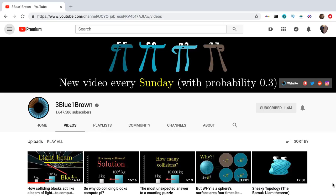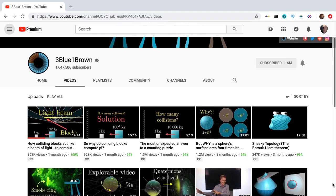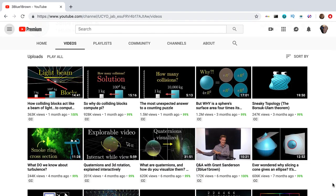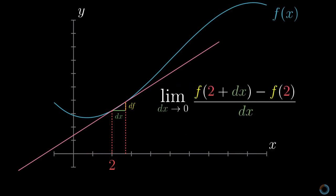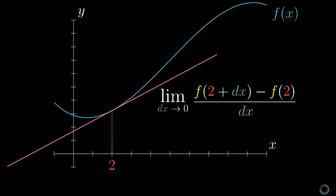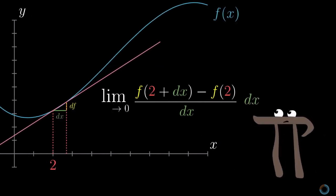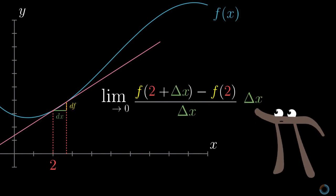Next up, we have 3Blue1Brown. This is traditionally a math channel. Grant Sanderson, the main man behind the scenes, teaches mathematical concepts using stunning visuals. For all you people aspiring to do something in the field of AI, I highly recommend checking out his playlist titled 'The Essence of Calculus.' He explains concepts like limits and determinants in such a visual way that you'll look at them in a completely different light, and these concepts are fundamental to many machine learning algorithms we see today. Sub to 3Blue1Brown for establishing your math foundations — you may think you know something, but when you see his videos, you'll probably think again.